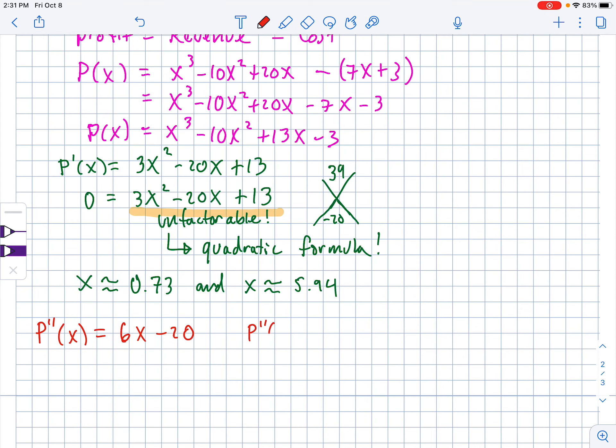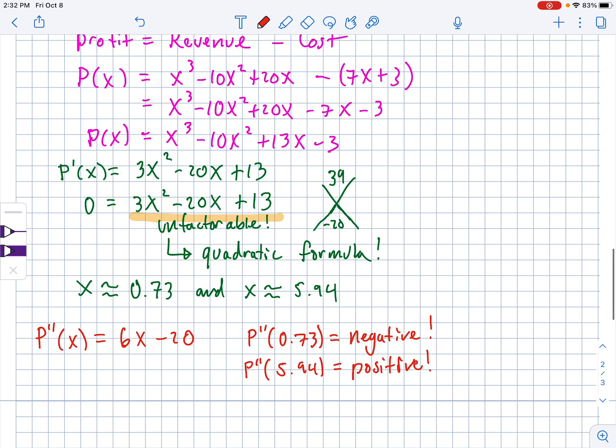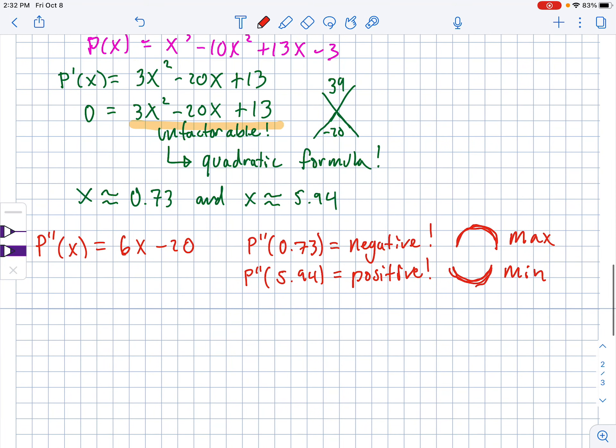Which will be 6X minus 20. So if you put P double prime of 0.73 into that function, you get that it is negative. If you put P double prime 5.94, it is indeed positive, which means that 0.73 is when you have a mountain because that's concave down and then concave up is the 5.94. So the 0.73 is a max and the 5.94 is a minimum.